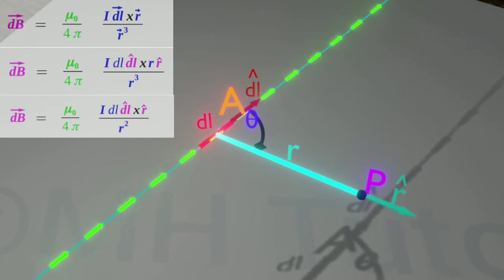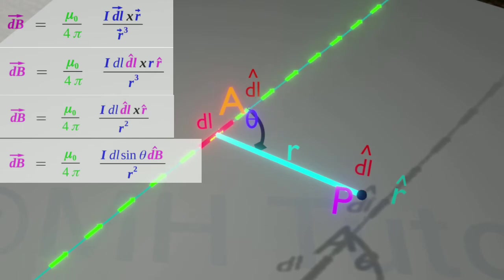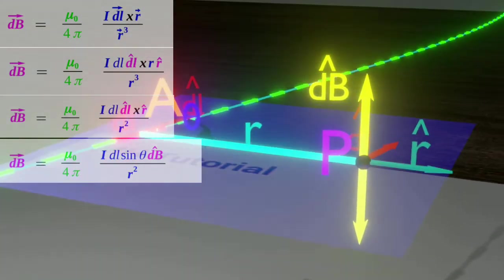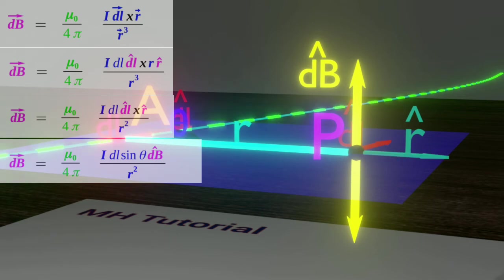The direction of dB is the cross product of cap DL and cap R. If we calculate the cross product, we get sine theta into cap dB, where cap dB is the direction of the vector dB.